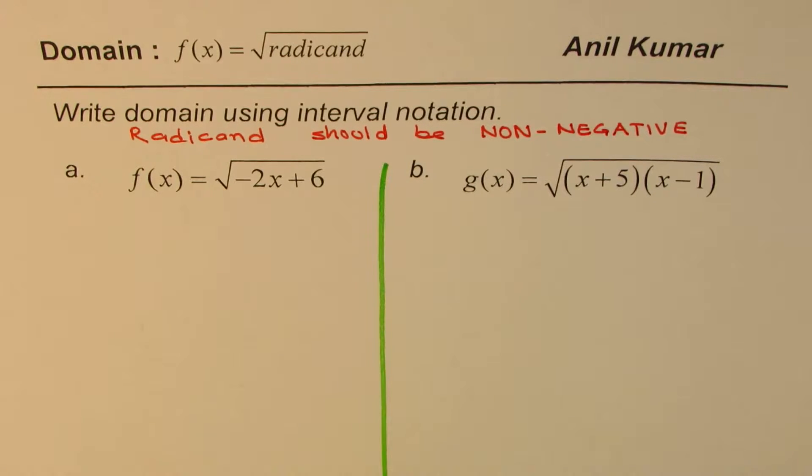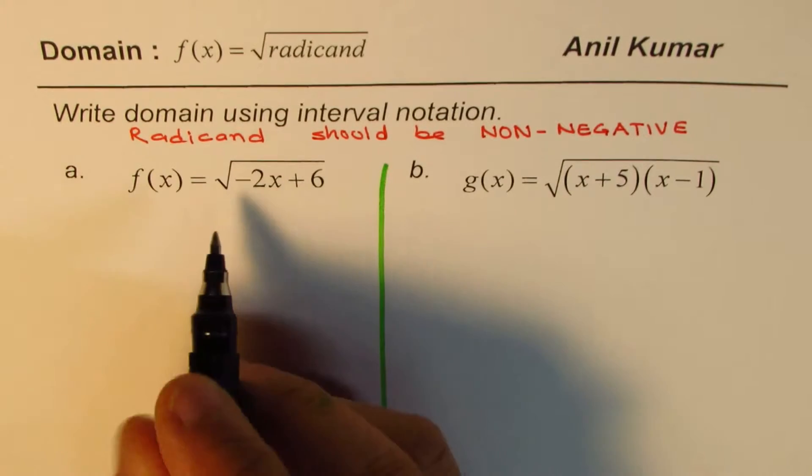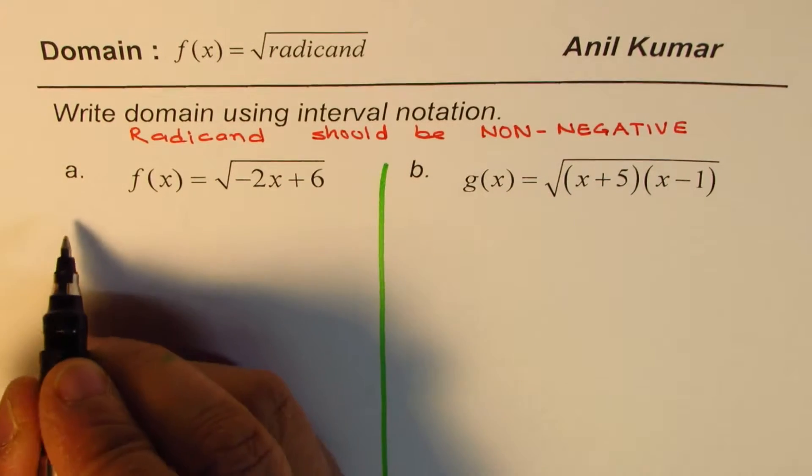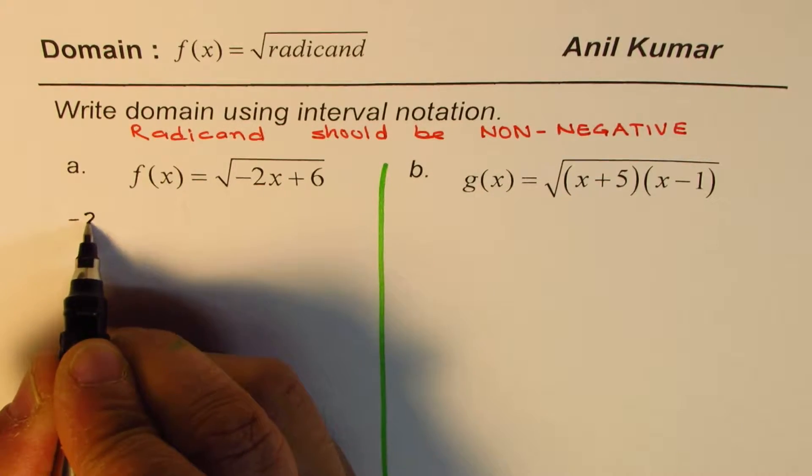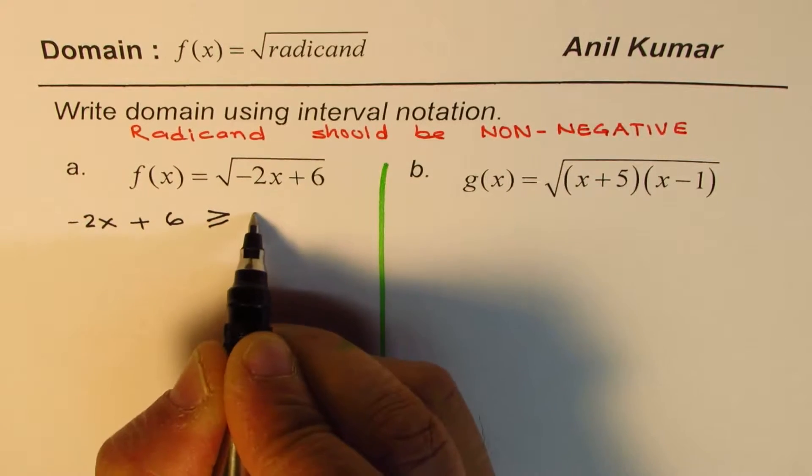Domain really means what values the independent variable x can take. In this particular case, what we have in the first one is a linear term -2x + 6 as a radicand, and this should be non-negative. That is to say, -2x + 6 should be greater than or equal to 0.